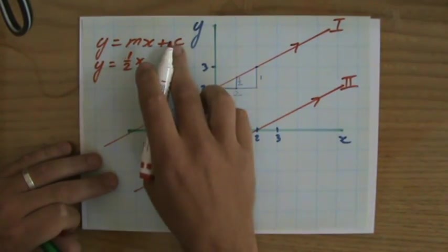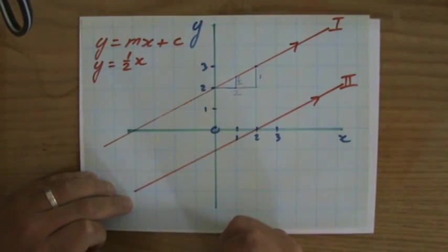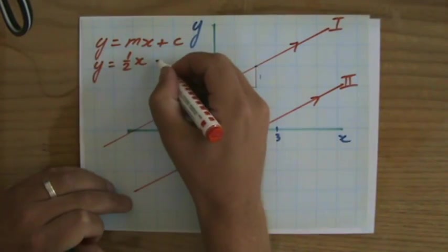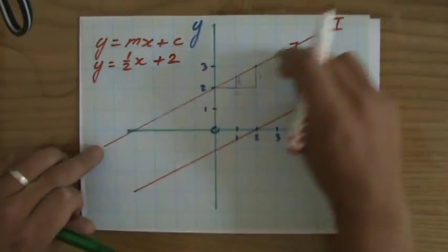So y equals a half x, gradient intercept form. And what is c? Where does it go through the y-axis? At point two, a positive two. So y equals a half x plus two. That would be the equation for line one.